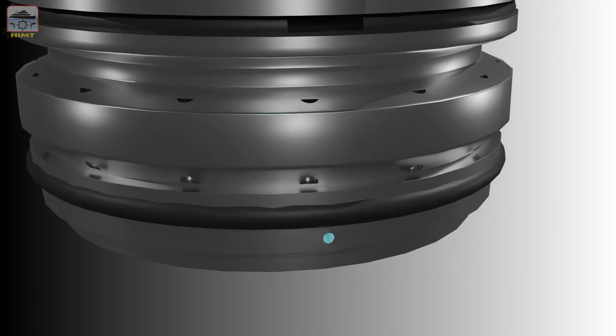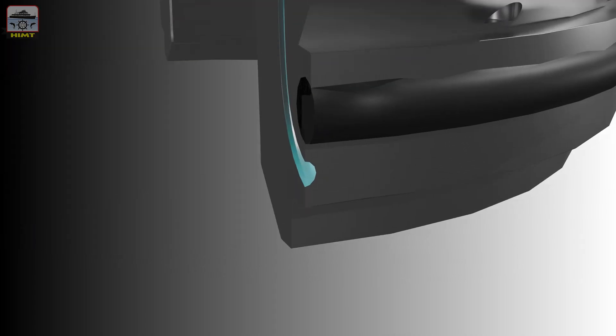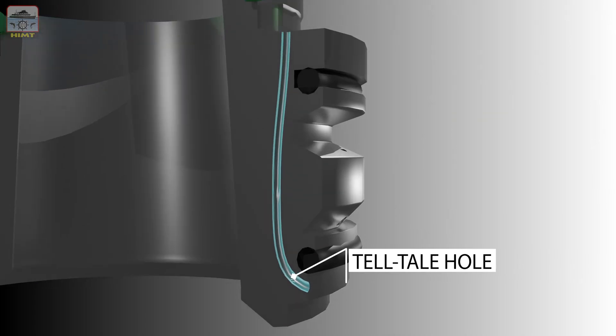The valve seat is also provided with a telltale hole to know the condition of the seating of the exhaust valve onto the cylinder cover. If the seating is poor, the exhaust gases will leak out. This hole prevents leaky exhaust gas getting into the cooling water side after damaging the o-ring.